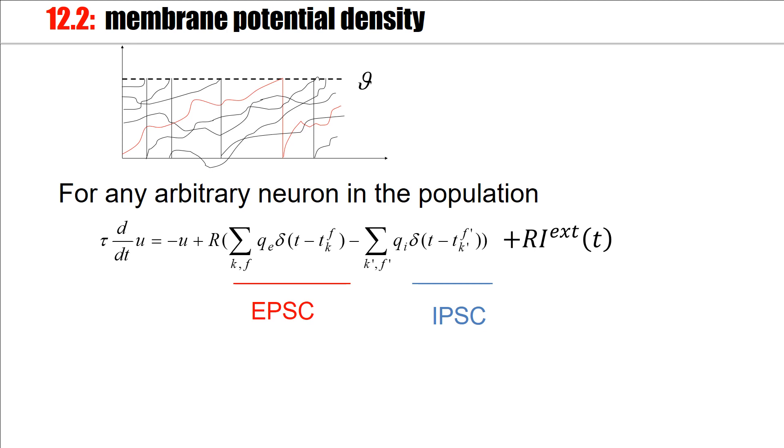So here we have our population of neurons, and this population has a distribution of membrane potentials. Each membrane potential will evolve as a function of time, and at some point it will hit the threshold, there's a spike, afterwards there's a reset, and the whole process starts again. We have not just one neuron, but a population, so there are many membrane potentials.